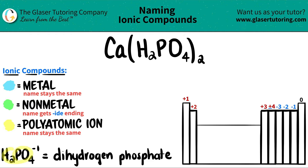In this case, H2PO4, which always has a negative one charge, is called dihydrogen phosphate. PO4 is phosphate, and you have two hydrogens, so 'di' means two — dihydrogen phosphate. And I can see it right here: H2PO4. So there's my polyatomic.